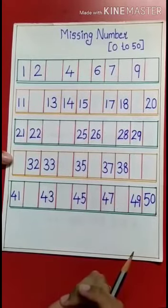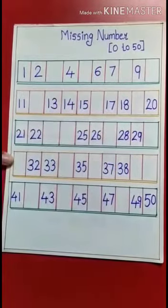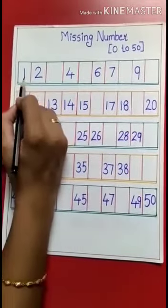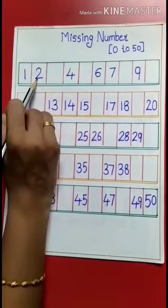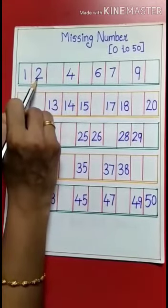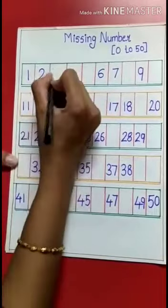For them to fill these boxes, we have to know the counting up to 50, and I know you all know about the counting. So by doing the counting we can fill the blanks. Okay, so first number is 1, after 1, 2.